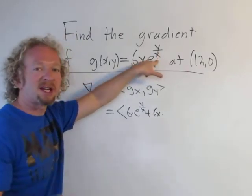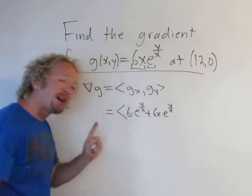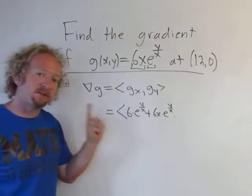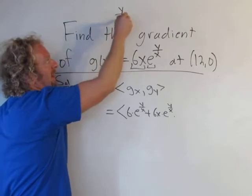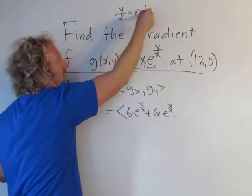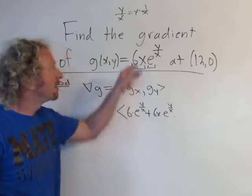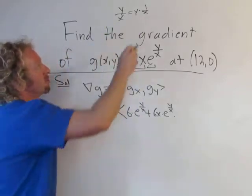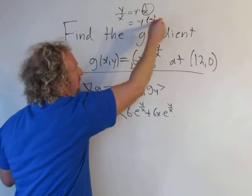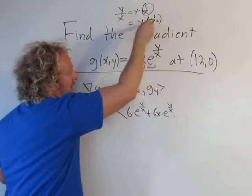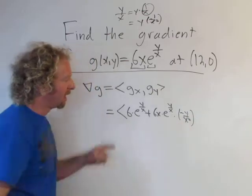Plus the first factor — six x — times the derivative of e to the y/x. The derivative of e to the x is just e to the x, so here it's e to the y/x, and you multiply by the derivative of the inside. Think of y/x as y times one over x, taking the derivative with respect to x — y is a constant — so the derivative of one over x is negative one over x squared.